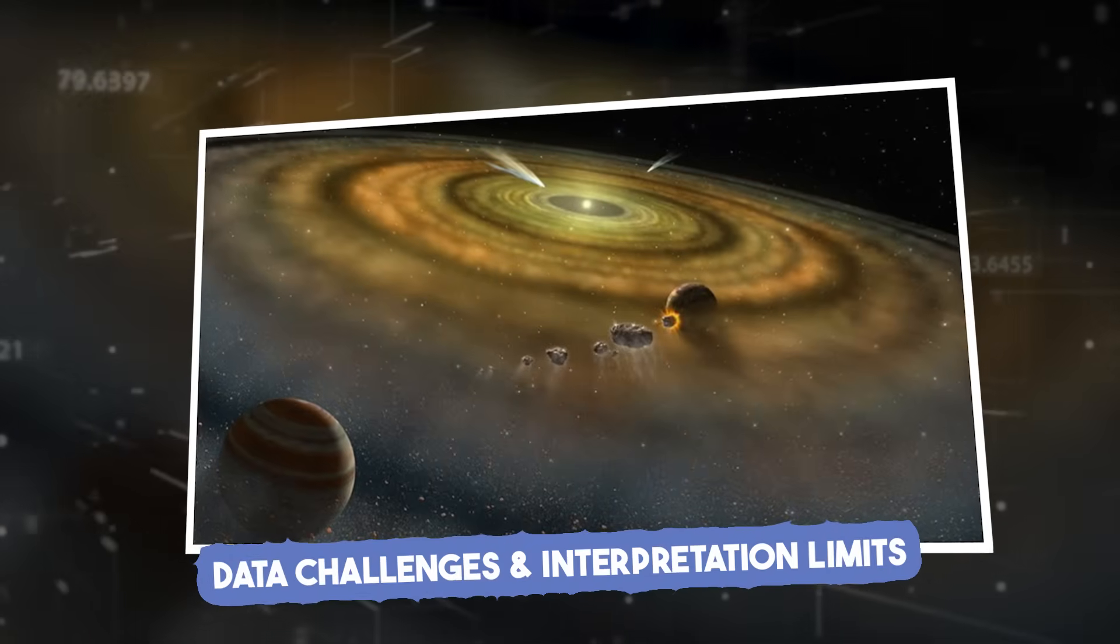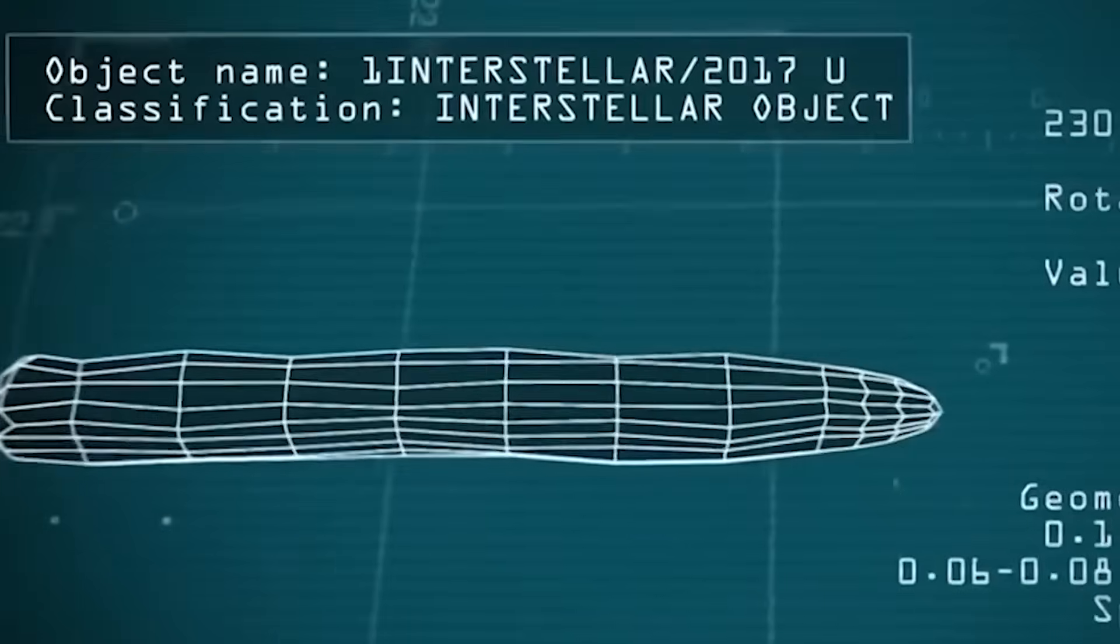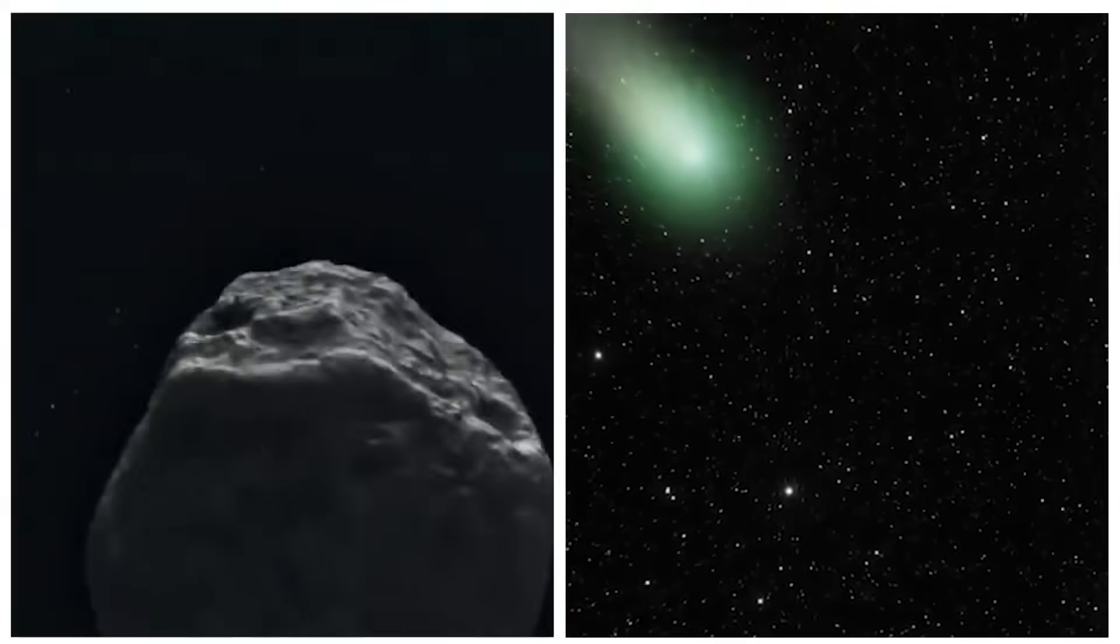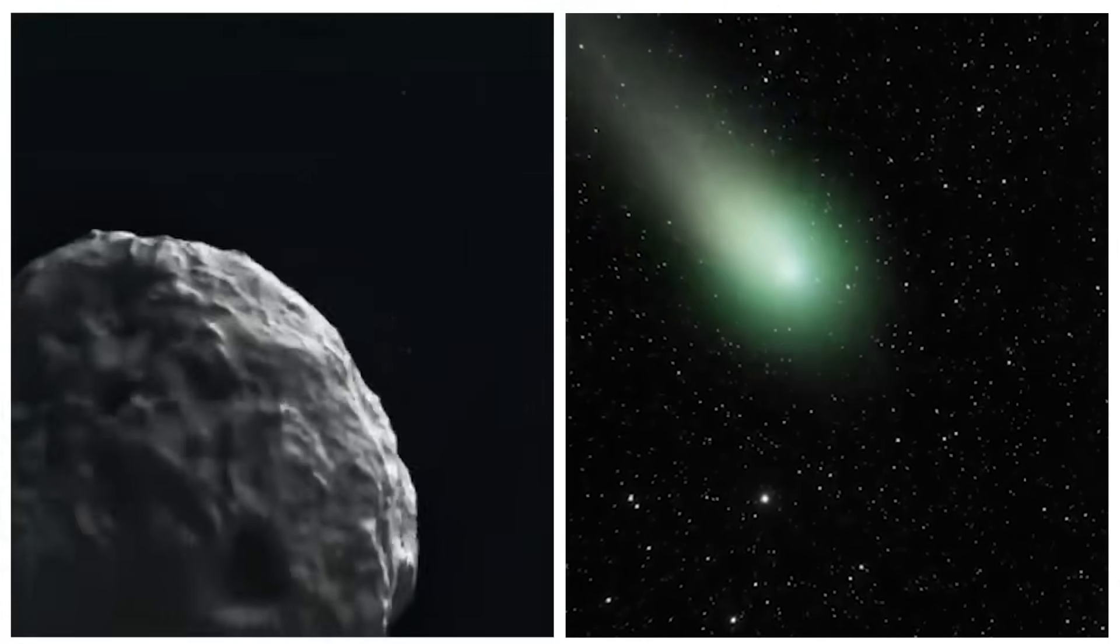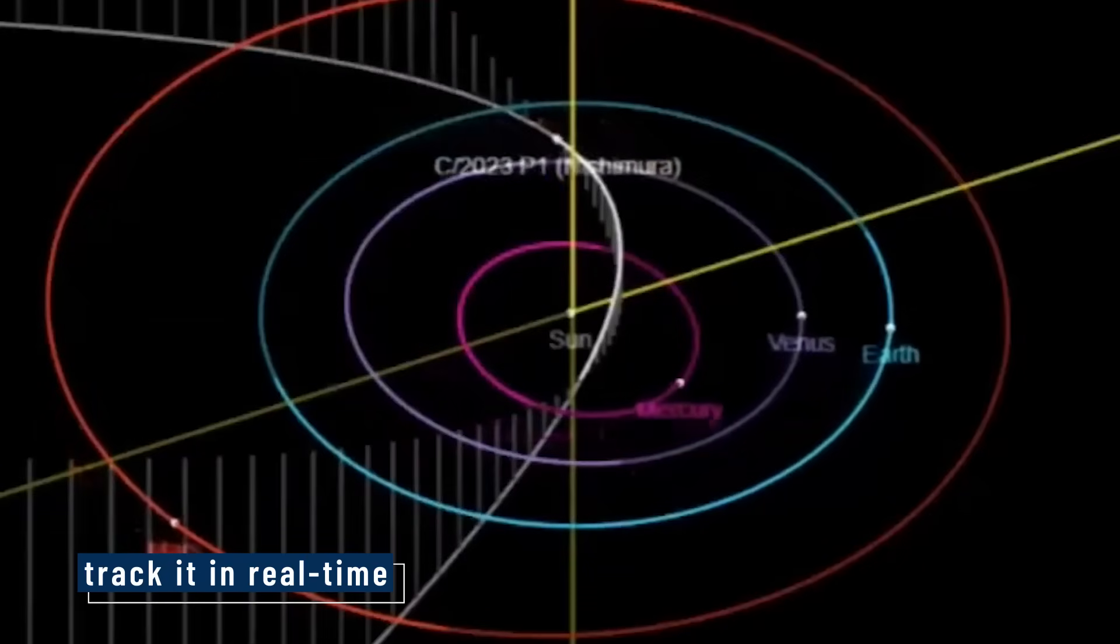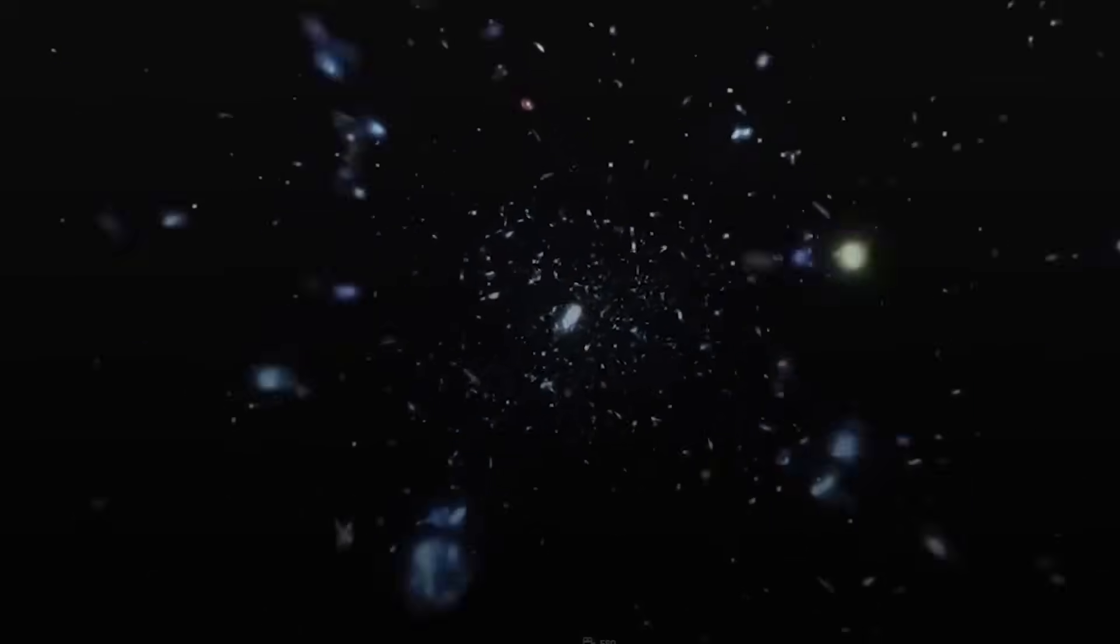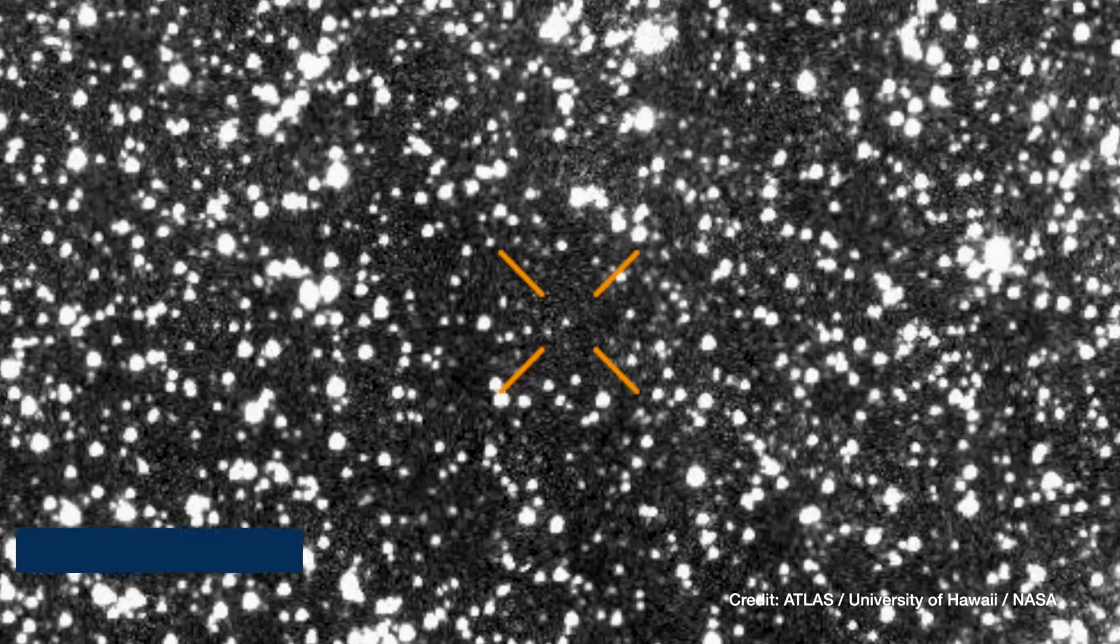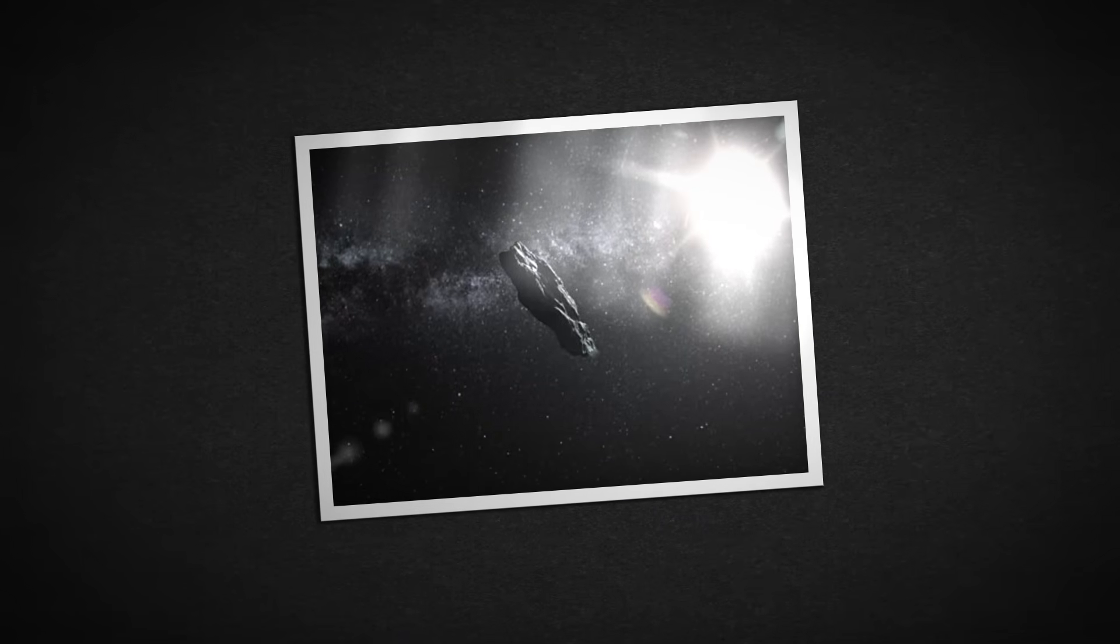Data challenges and interpretation limits. Capturing 3i/ATLAS pushed technology to its edge. At magnitude 17, the object was barely brighter than the background sky. Moving at 60 kilometers per second, even short exposures turned it into a streak. Astronomers had to track it in real time, letting stars blur while keeping the object in focus. Dozens of exposures were stacked, filtered, and corrected. Removing cosmic rays, atmospheric noise, and telescope drift. Each pixel became data, carefully refined. But even after all that, the image stayed ambiguous. A stretched blur. Not quite a dot. Not quite a streak.